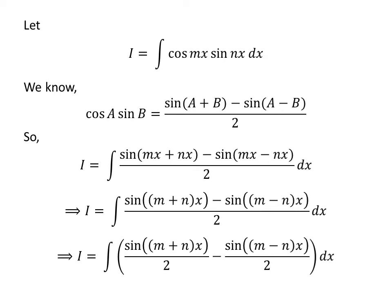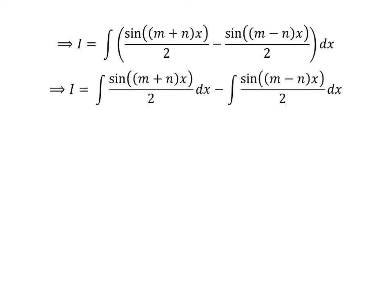The integrand can be expressed as the difference of two fractions. Application of the linearity property of integrals gives us I is equal to the integral of sine of m plus n times x upon 2, with respect to x, minus the integral of sine of m minus n times x upon 2, with respect to x.